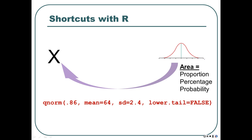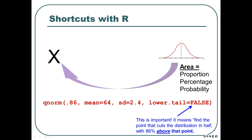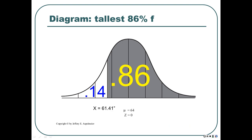Using R: qnorm(0.86, mean=64, sd=2.4, lower.tail=FALSE). You put in the area as a proportion, mean, sd, and lower.tail=FALSE — so it finds the point that cuts the distribution with 86% above that point. Otherwise it gives you the wrong number.